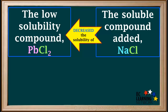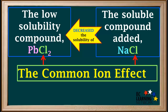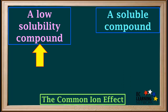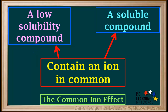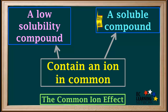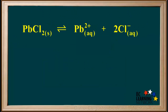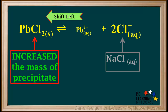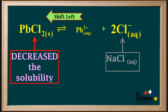Remember, we had shown that adding the soluble salt NaCl decreased the solubility of the low solubility compound PbCl₂. This is called the common ion effect. The common ion effect can be stated as follows: whenever a soluble ionic compound is added to a saturated solution of a low solubility compound and they contain an ion in common, the addition of the soluble compound will decrease the solubility of the low solubility compound. In the example that we went through, we started with saturated PbCl₂ and added the soluble compound NaCl, which increased the concentration of Cl⁻ in the saturated solution. This caused the equilibrium to shift left, which increased the amount of PbCl₂ precipitate in the beaker, and therefore decreased its solubility.